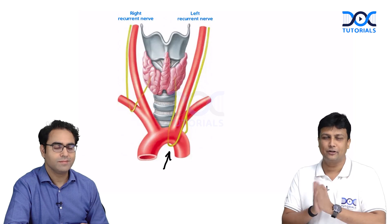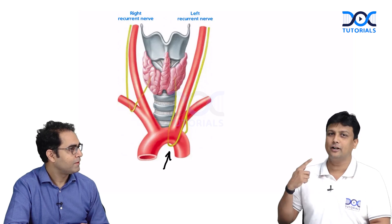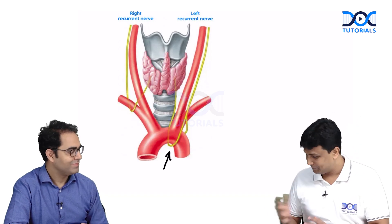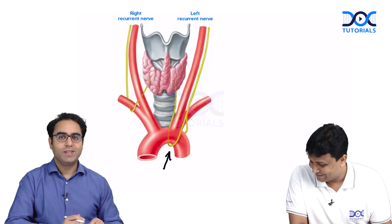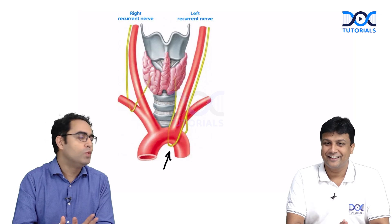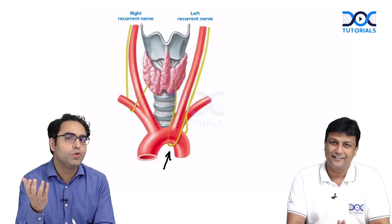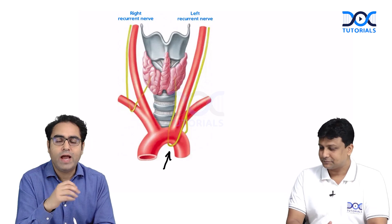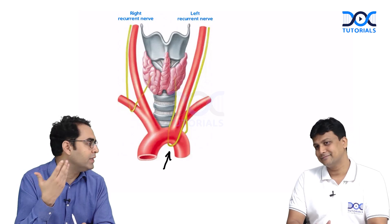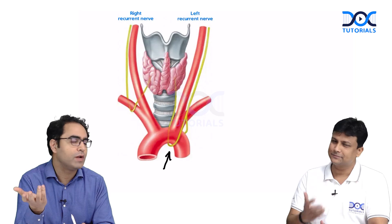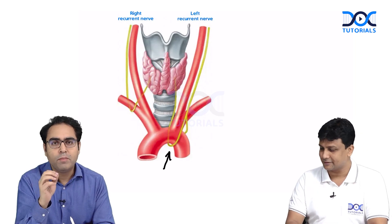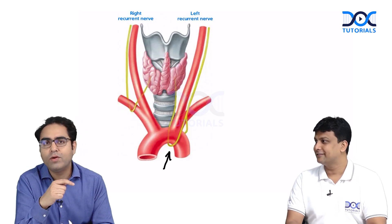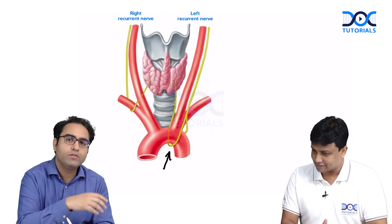To repeat the anatomical basis: the right recurrent laryngeal nerve turns around the subclavian artery, and the left recurrent laryngeal nerve turns around the arch of aorta. The superior laryngeal nerve is close to the base of skull at its origin and never touches mediastinal structures. The right RLN turns at the root of the neck near the apex of the right lung, while the left dips into the mediastinum at approximately the level of T4, looping around the arch of aorta.